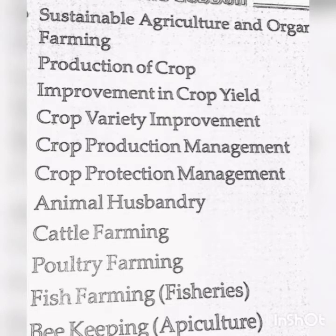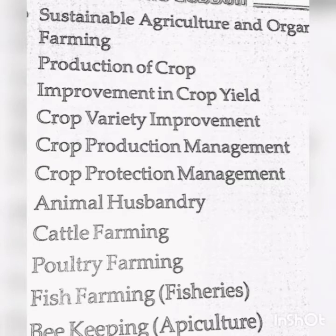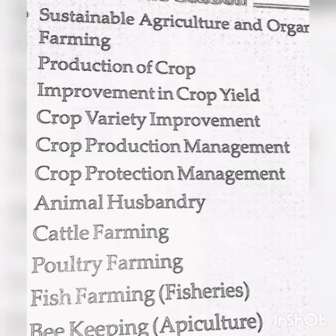Now I am going to talk about the lesson: Improvement in Food Resources. In this lesson, the topics are: first, Sustainable Agriculture and Organic Farming; second, Production of Crop; third, Improvement in Crop Yield; fourth, Crop Variety Improvement; fifth, Crop Production Management; sixth, Crop Protection Management; seventh, Animal Husbandry; eighth, Cattle Farming; ninth, Poultry Farming; tenth, Fish Farming and Fisheries; and last, Beekeeping — Apiculture.